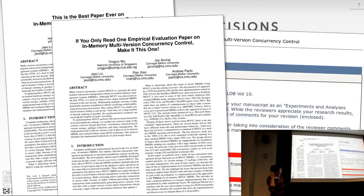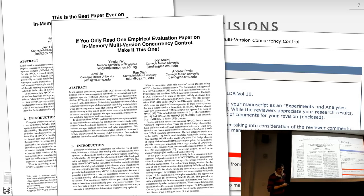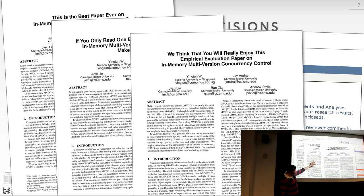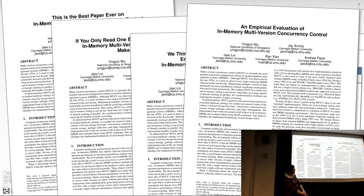So we came back with a second title: 'If You Only Read One Empirical Evaluation Paper on In-Memory Concurrency Control, Make It This One!' That didn't fly either — they said it's subjective. Then the third title was 'We Think You Will Really Enjoy This Empirical Evaluation of In-Memory Multi-Version Concurrency Control.' At that point the paper was accepted, but the program chair said either change the paper title or we're rejecting it. Since I didn't have tenure and the students needed the paper, we ended up with the boring title you read.